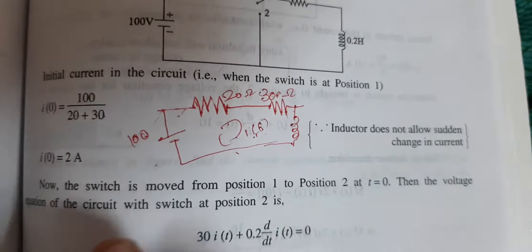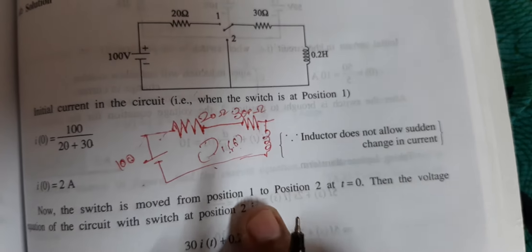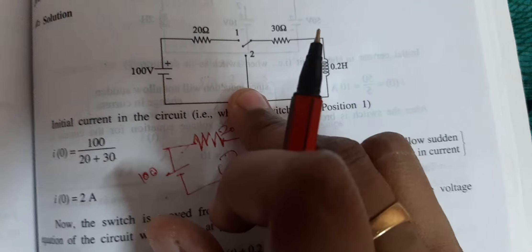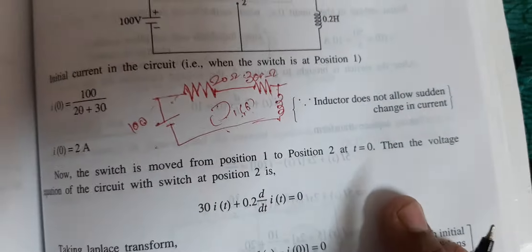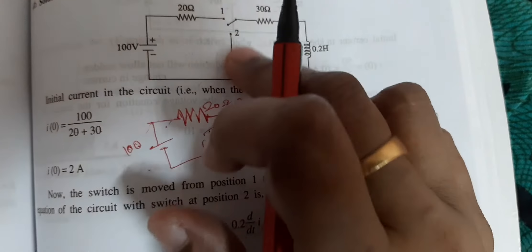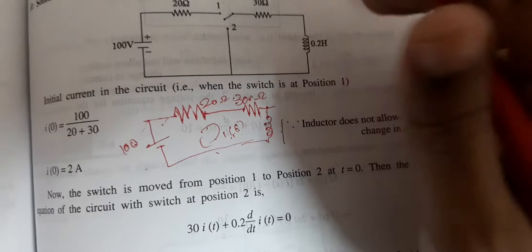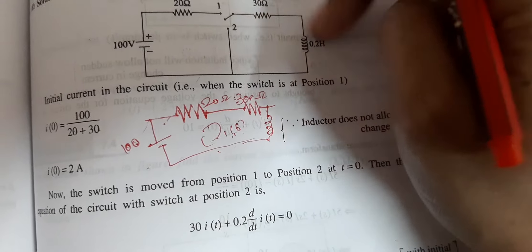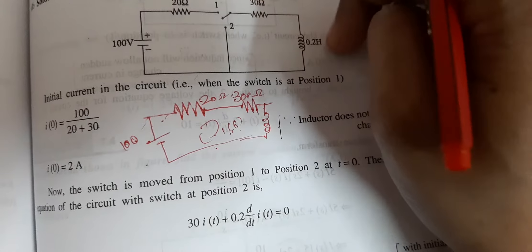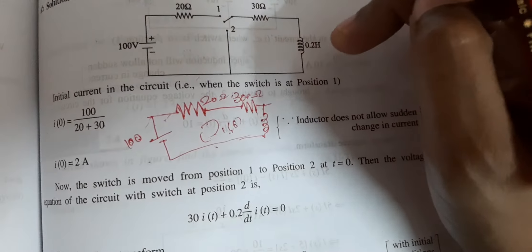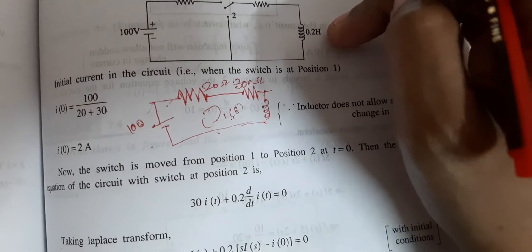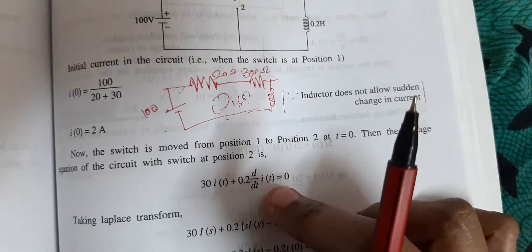Now the switch is moved from position 1 to position 2. Apply Kirchhoff's Voltage Law. In position 2, the circuit has two components: 30 into I(t) plus L times 0.2 into dI(t)/dt equal to 0.